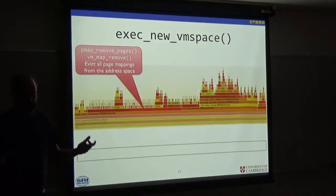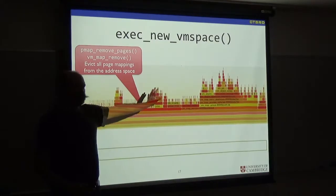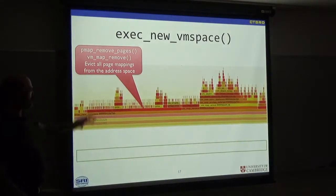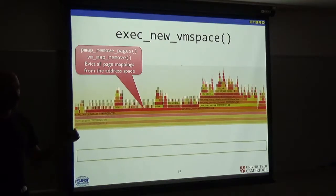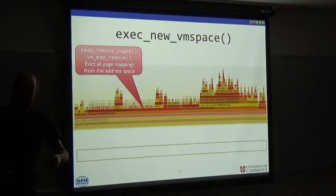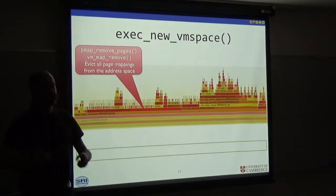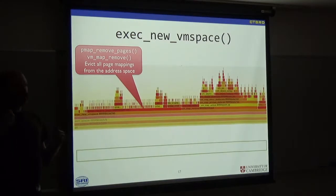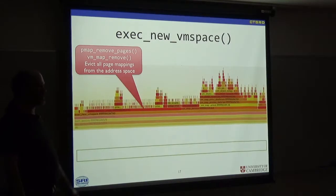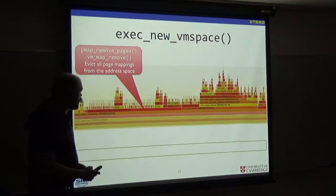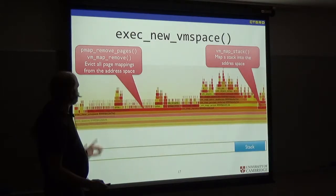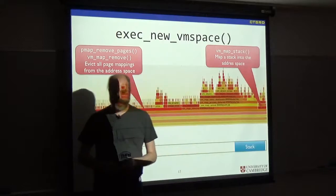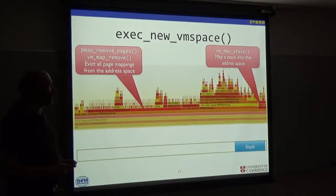Now, we're going to jump here. The first thing that happens in the image act is this exec_new_vmspace call. Its job is to set up your virtual memory address space. The first thing it does is it wipes out all your page mapping. Because you forked the process, and you've got some random environment. You just need to get rid of it all. We take all this stuff out of the address space. We set up a few mappings, including we map the stack into the address space.